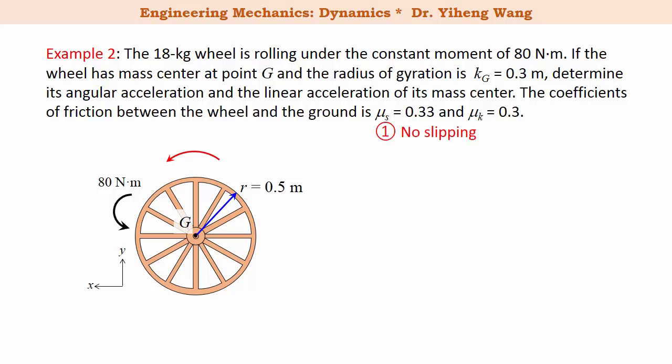Let's look at the first situation assuming slipping does not happen. We draw the free body diagram of this wheel. It is subjected to the applied couple moment, its own weight force, normal force from the ground, as well as the frictional force exerted by the ground to the wheel. It is important to determine the direction of this frictional force. When this wheel is rolling under this couple moment, at the point of contact, the impending motion of the wheel is to the right. Therefore, the frictional force exerted by the ground to the wheel points to the left. And this completes the free body diagram.